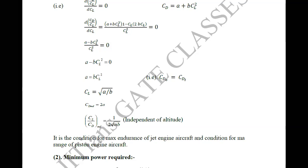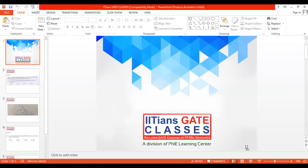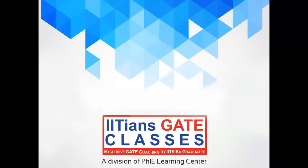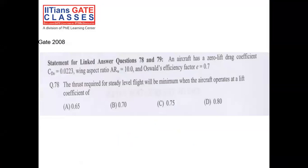In this section we will solve some gate problems and wind up this section. Question numbers 78 and 79 — it is a linked question. The aircraft data given is: zero-lift drag coefficient C_D0 = 0.0223, wing aspect ratio AR = 10, and Oswald lift efficiency factor e = 0.7.